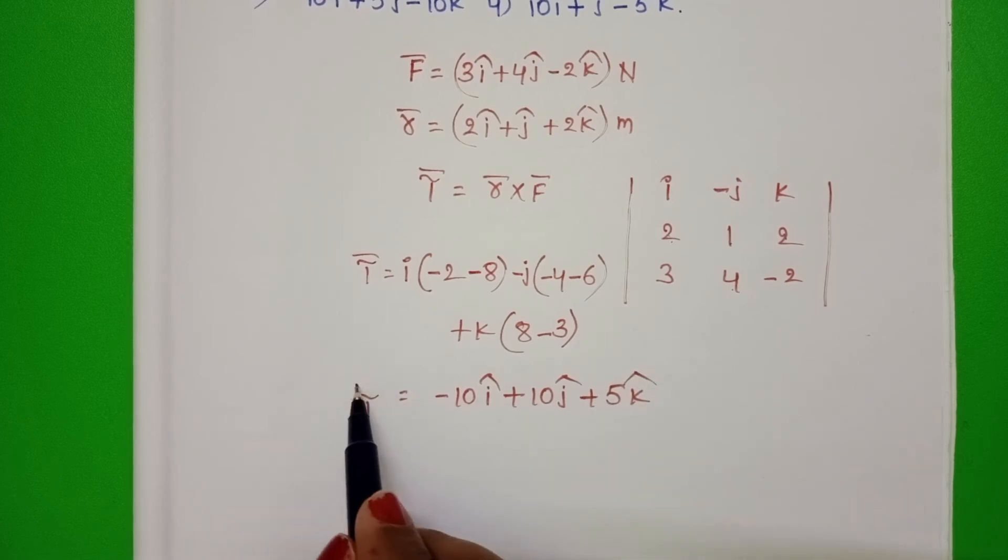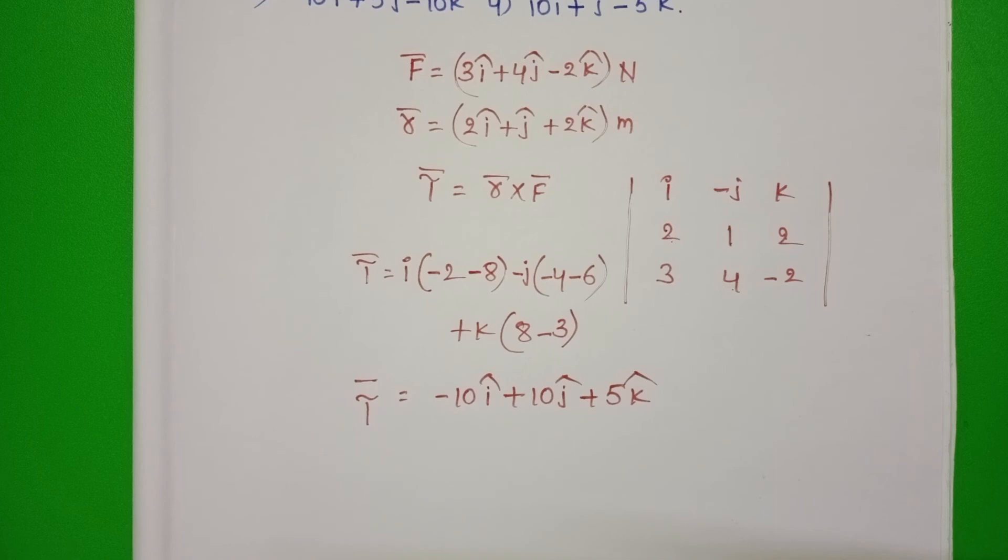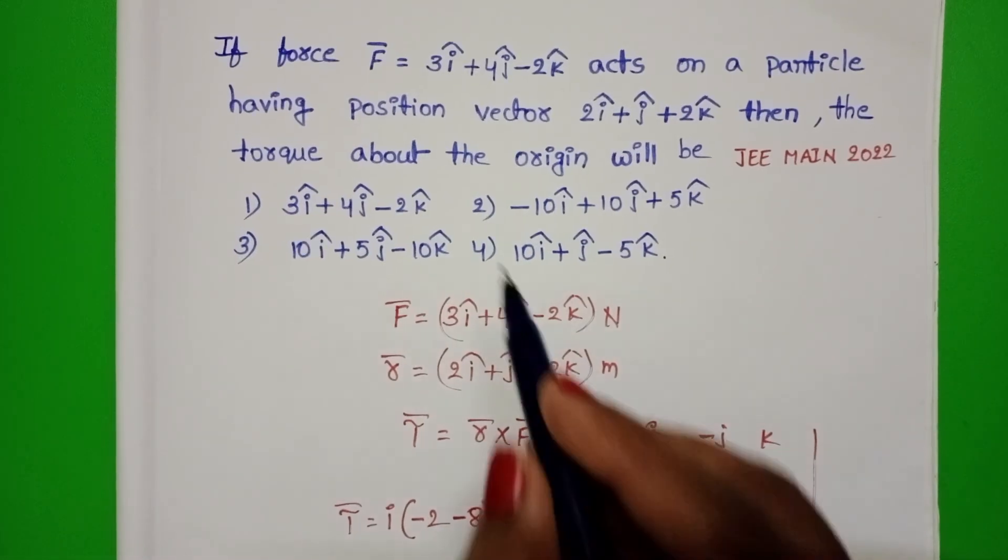Torque is equals to minus 10 I cap plus 10 J cap plus 5 K cap. Second option is correct.